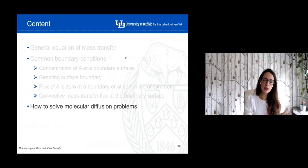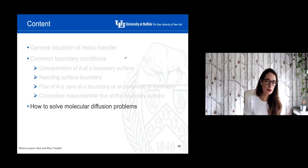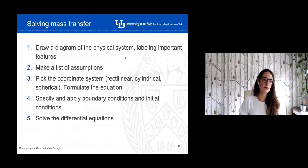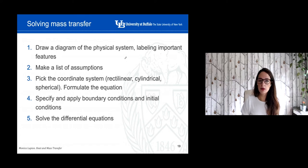So we went over the general equation of mass transfer already, and we also discussed, at least globally, the most common boundary conditions you can find in the problems. Let's now spend a few minutes discussing how to solve molecular diffusion problems. My recommendation is: first, draw a diagram of the physical system and label important features and important information — temperature, whether there is a catalytic reaction, whether there is an impermeable wall, anything that could have an effect on the equations.